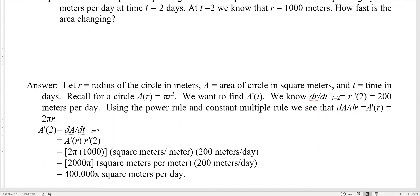Multiplying those together, that's 400,000 pi square meters per day. Again, it's a product of derivatives.